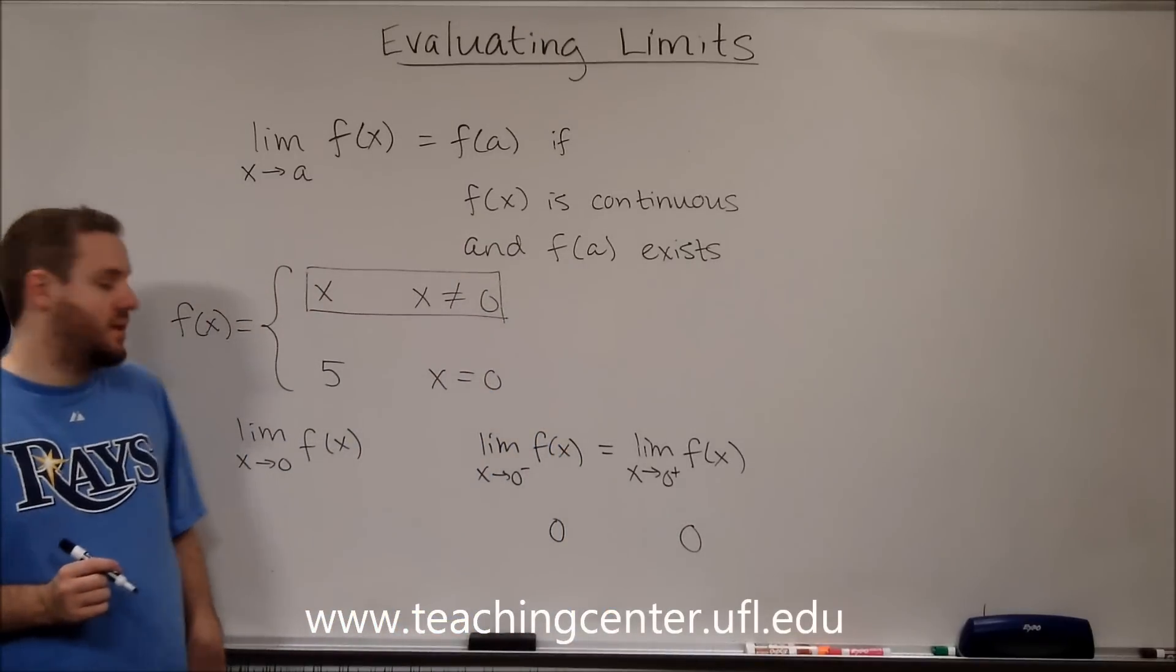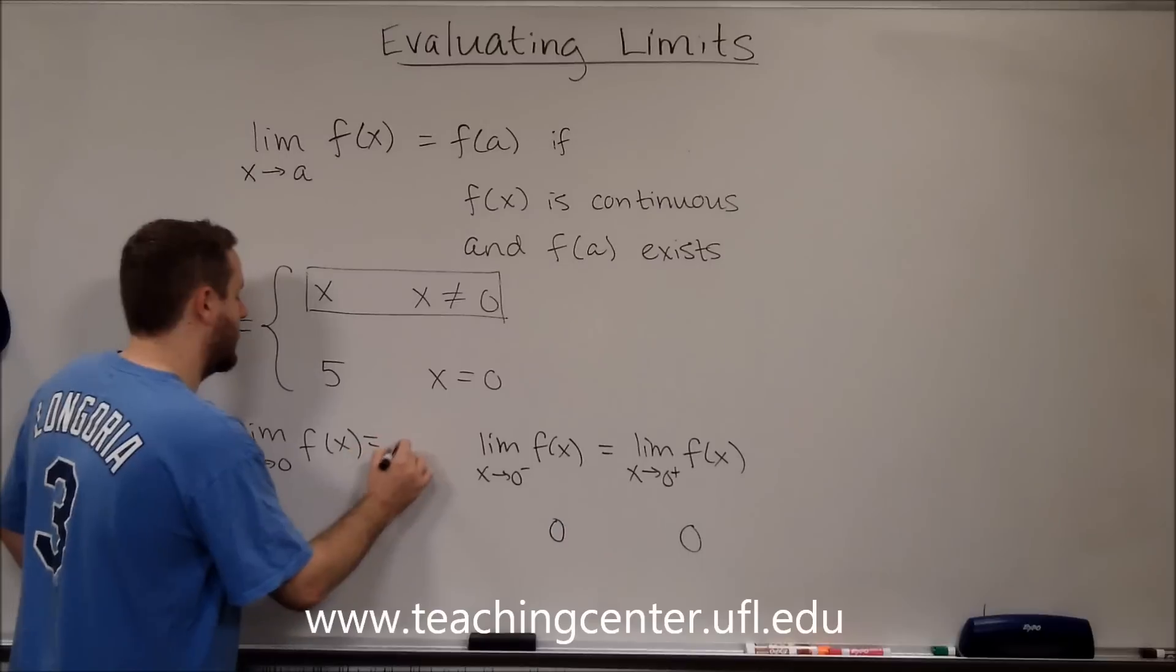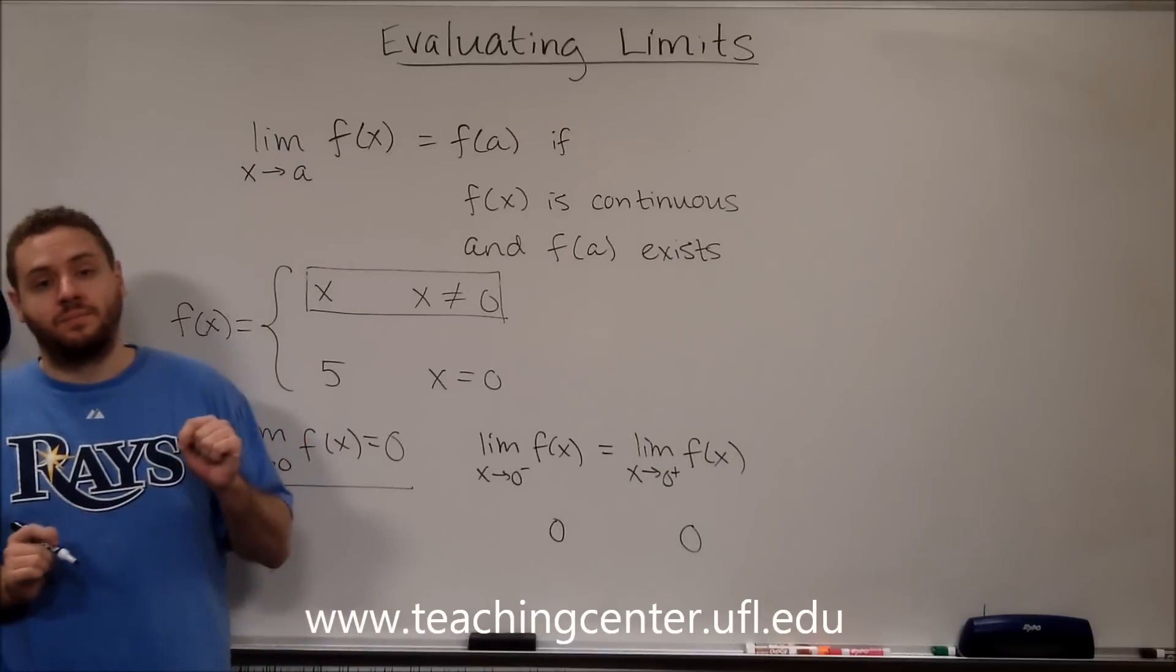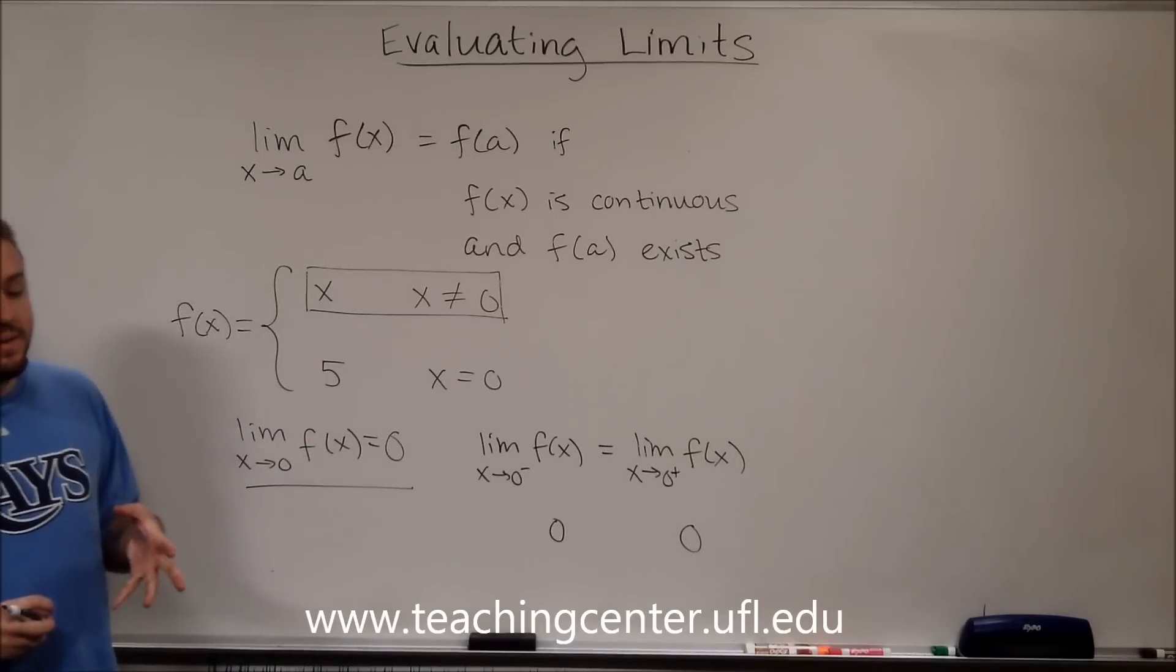So if the limit from the left and from the right are zero, then this limit exists and it is zero, not five. So that's a pretty important thing to keep in mind there.